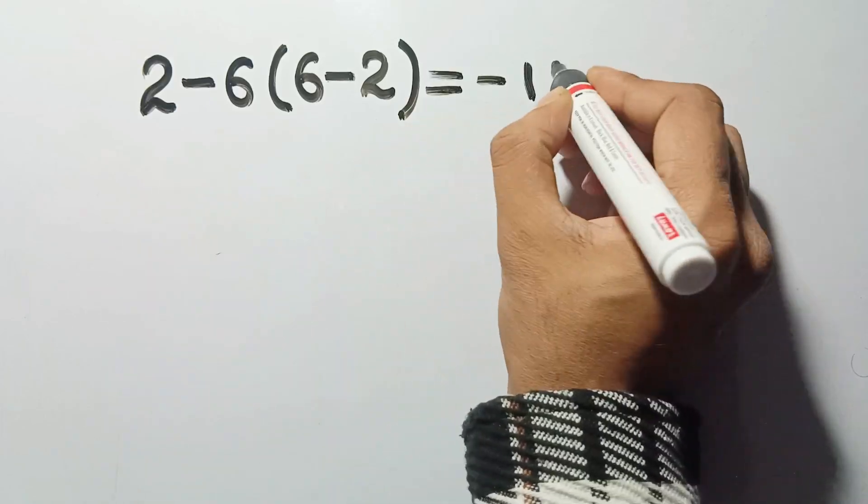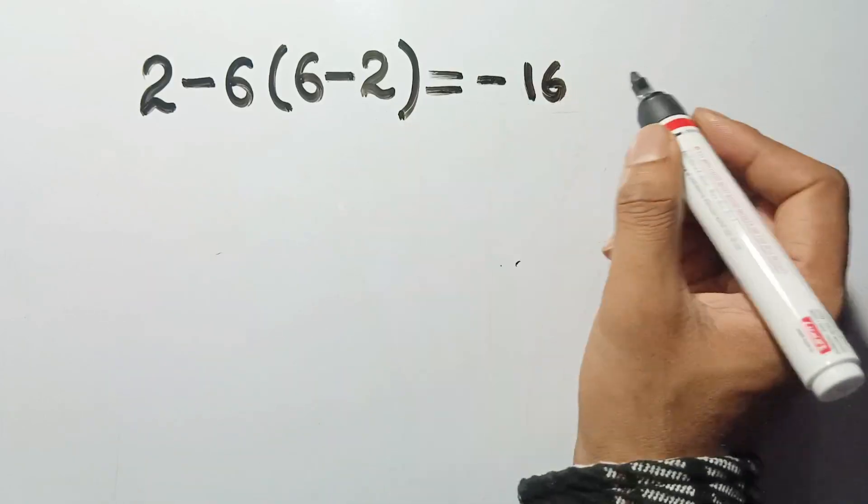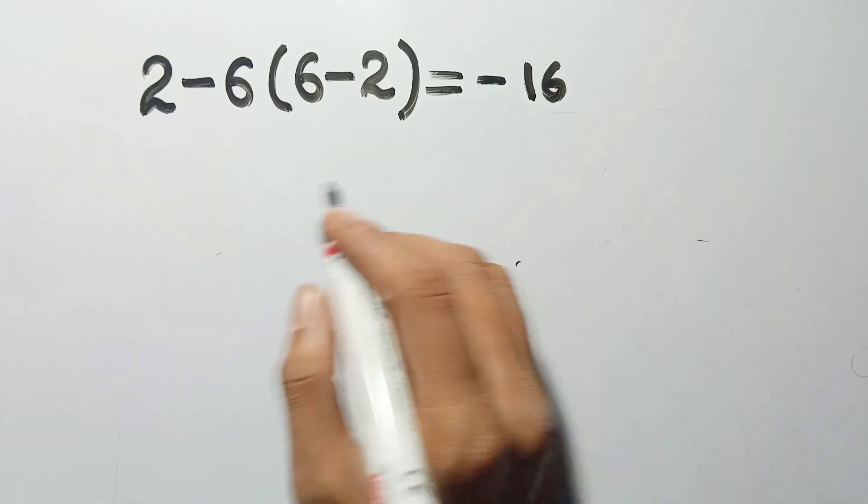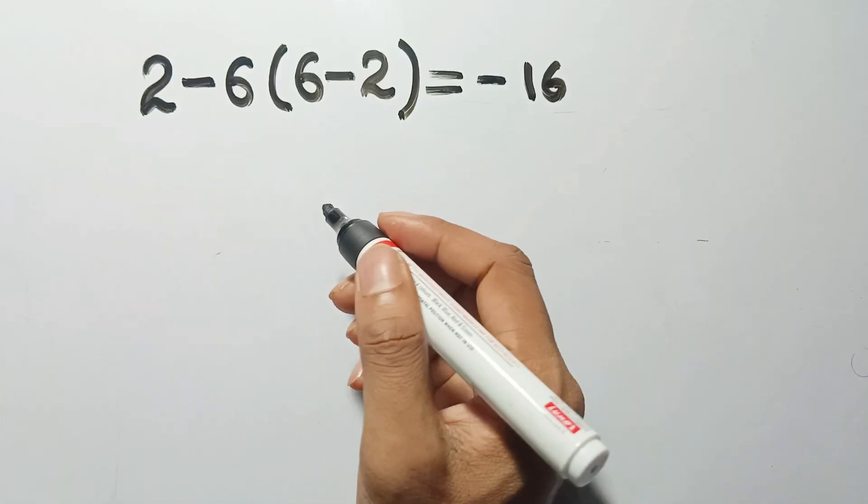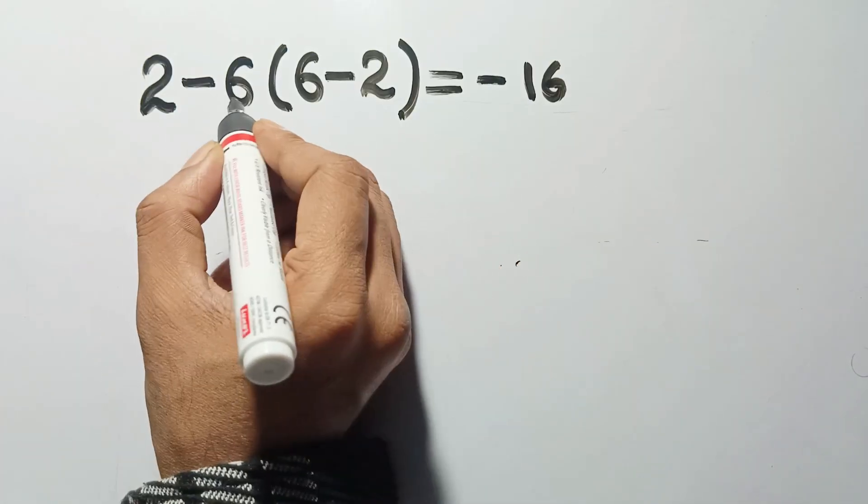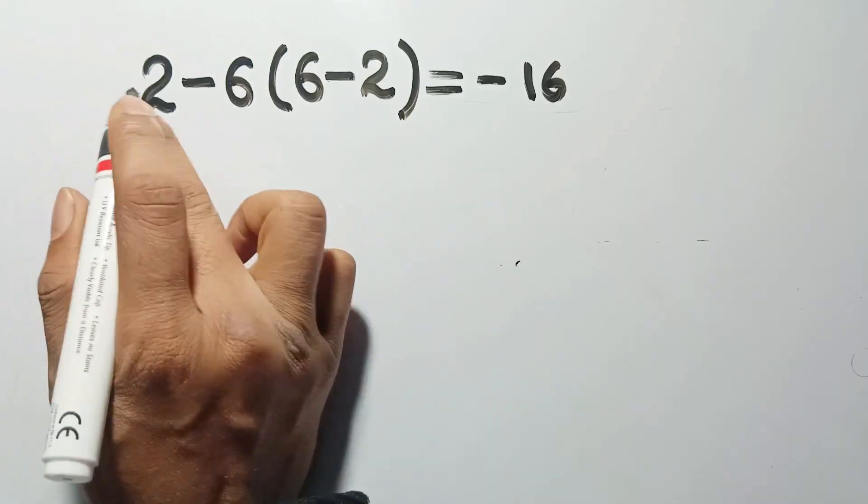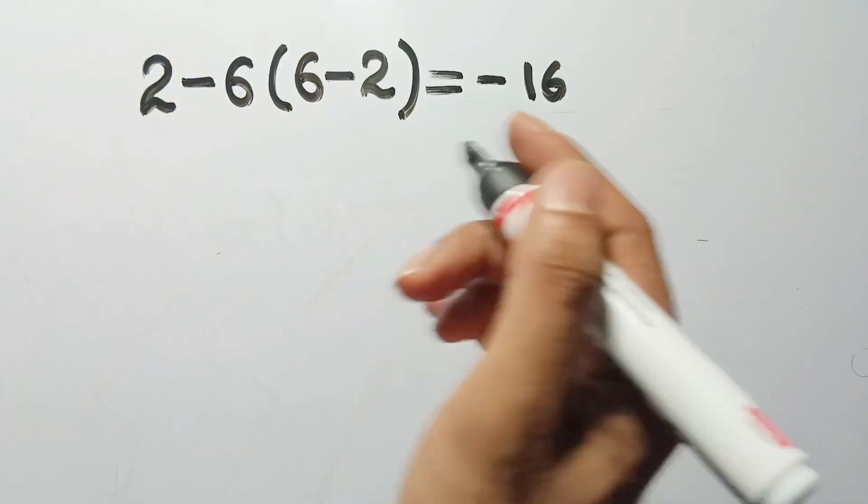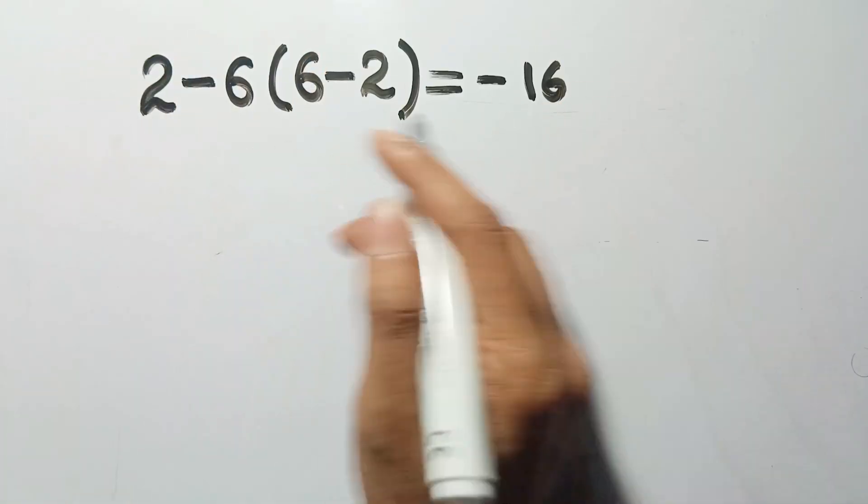Your brain probably went straight to negative 16, right? That's what it wants you to think. Check out this classic trap. 2 minus 6, parentheses, 6 minus 2. At first glance, a lot of people do this.